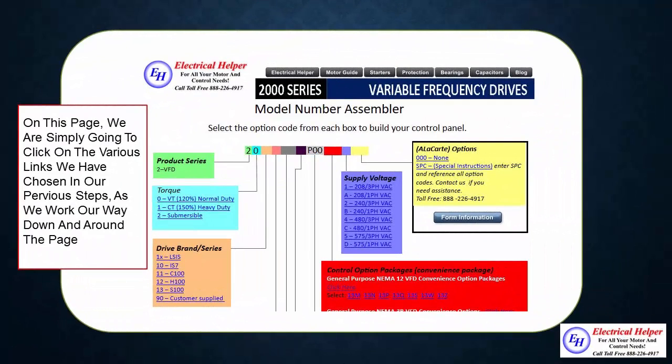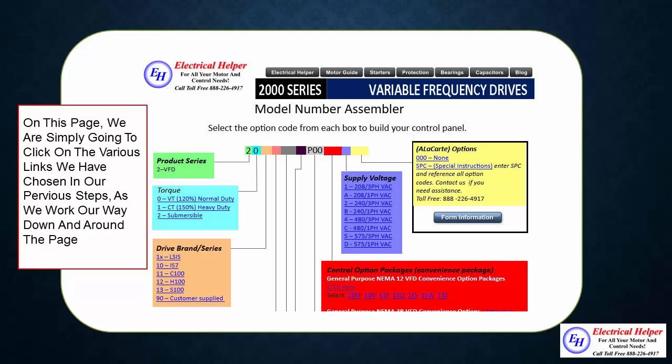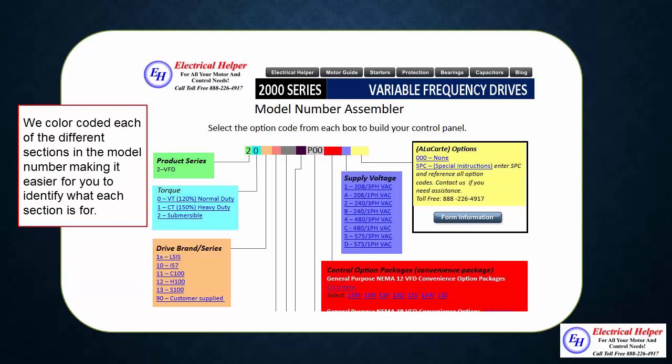On this page we are simply going to click on the various links we have chosen in our previous steps. As we work our way down and around the page you will notice that the model number at the top of the page is being formed. We color coded the sections to make it easier for you to identify the sections you are working with.